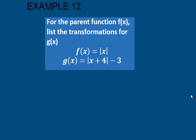For example 12, it says for the parent function f of x — this being the original function f of x right there — list the transformations for g of x. So what did I do to f of x to get to g of x? Let's take a look at the differences.